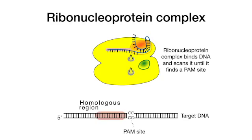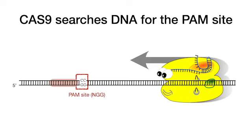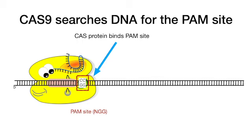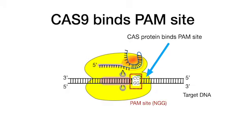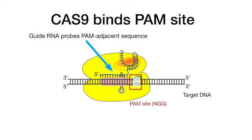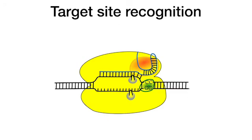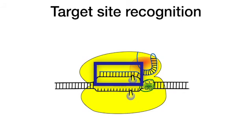The ribonucleoprotein complex is now active. It binds double-stranded DNA and scans it to find a PAM site. Cas9 uses its PAM binding site to recognize the sequence 5' NGG, where N is any base, and binds it. When bound to the PAM, the complex checks whether the adjacent DNA sequence matches the guide RNA by base pairing the guide RNA to the candidate DNA strand. If the match is perfect or very close, the site is recognized and the target DNA forms a displacement loop — a single-stranded bubble where one DNA strand is base paired to the invading RNA.